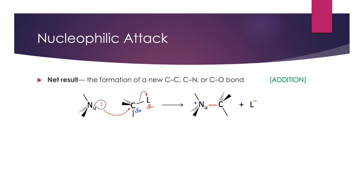A subsidiary effect of this particular nucleophilic attack is that the carbon also loses that atom L — the leaving group. Notice that L takes its electrons with it. The electrons for the new bond between the nucleophile and carbon come from the nucleophile, so in order to maintain a neutral charge on the carbon, L leaves the carbon and takes the electrons with it.